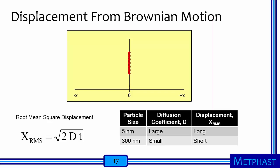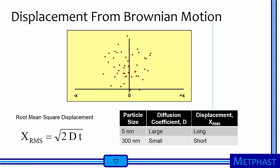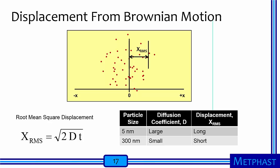Brownian motion causes particles to be displaced. Consider if we line up a bunch of particles at time zero and then allow them to randomly jitter. After some time, these particles become displaced away from the center, randomly moving in any direction. The net displacement can be expressed as the root mean square displacement, which is simply the square root of two times the diffusion coefficient times time. A small particle, like a 5 nanometer particle, will have a large diffusion coefficient and therefore a large displacement due to diffusion, whereas a larger particle, say 300 nanometers, will have negligible displacement.